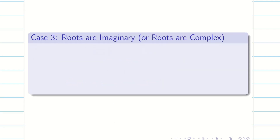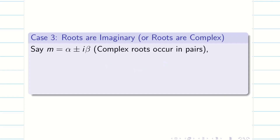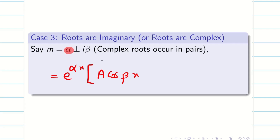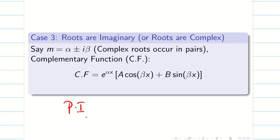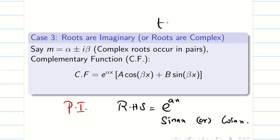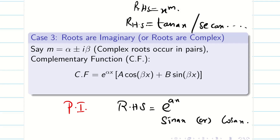Finally, when the roots are imaginary or complex, we always get roots of the form m = α ± iβ. They always occur in pairs, and the solution is: CF = eᵅˣ·(A·cos βx + B·sin βx). This is the complementary function when roots are complex. Now the right-hand side deals with the particular integral (PI). The right-hand side may be eᵃˣ, sin ax, cos ax, tan ax, sec ax, or a polynomial. How to find the solution for these cases will be covered in the forthcoming sessions.